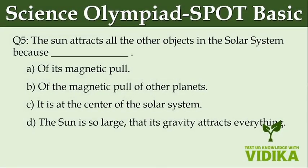The Sun attracts all the other objects in the solar system because dash. Option A: of its magnetic pull. Option B: of the magnetic pull of other planets. Option C: it is at the center of the solar system. Option D: the Sun is so large that its gravity attracts everything.